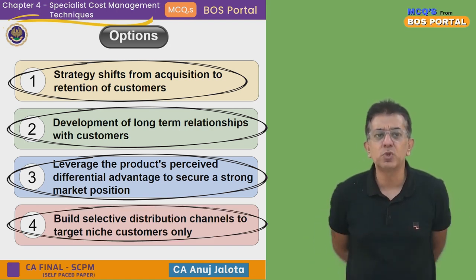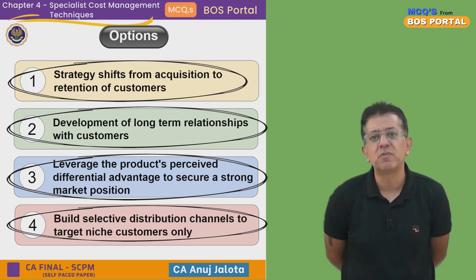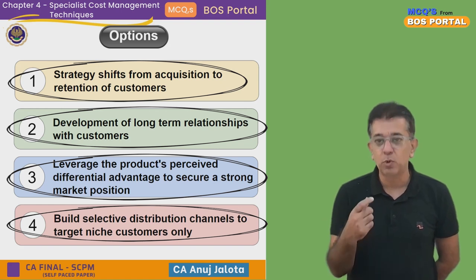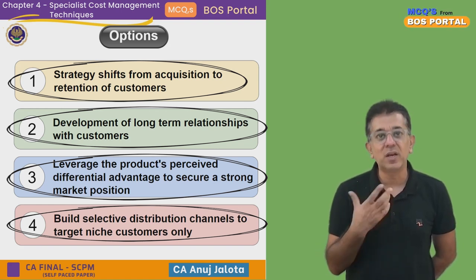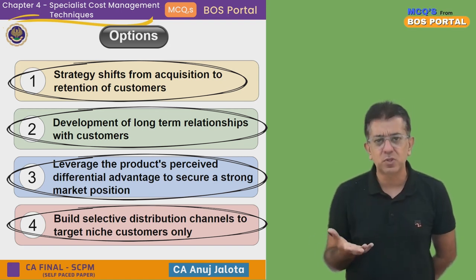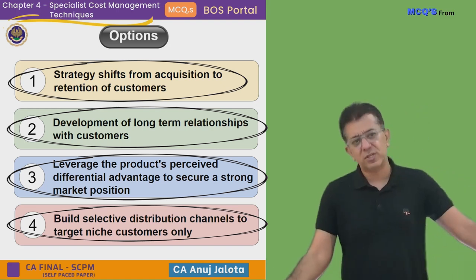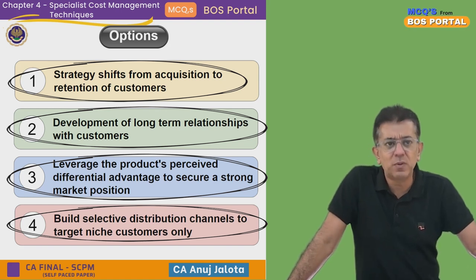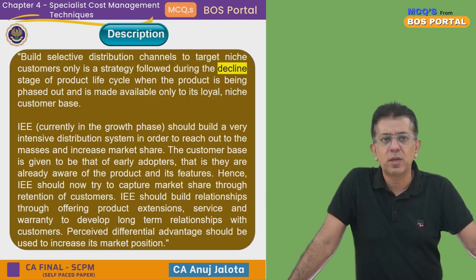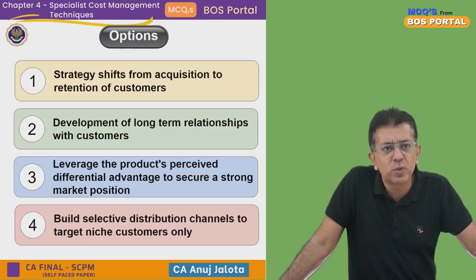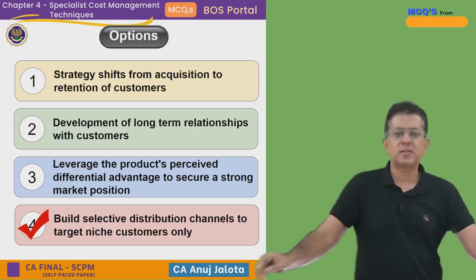Option four — build selective distribution channels to target niche customers only — is not the right strategy here. Targeting only niche customers is something you do in the declining stage when demand is very low and only a few loyal customers remain. While we are still in the growth stage, we can attract more customers and should try to retain as many as possible. Therefore, option four cannot be a strategy in the growth stage — it should NOT be adopted. That is the correct answer.